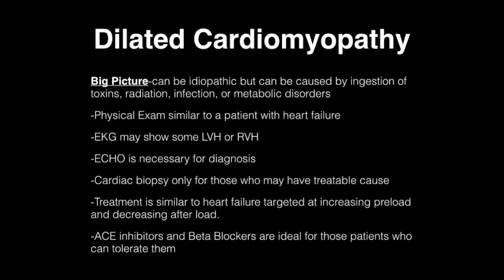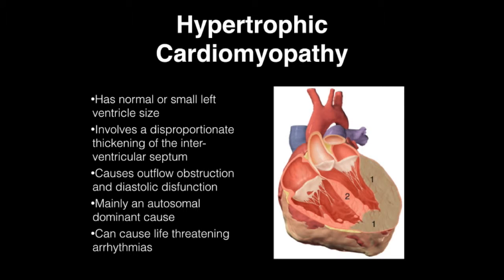Hypertrophic cardiomyopathy involves a thickened interventricular septum that causes outflow obstruction and diastolic dysfunction — essentially a stiff ventricle with normal or small left ventricular size. On physical exam, if you detect a murmur, it will be a crescendo-decrescendo systolic murmur — for the exam, just focus on it being a systolic murmur. You may hear an S4 and S3 gallop due to ventricular stiffness. Of all the cardiomyopathies, it is the most likely to cause life-threatening arrhythmias.